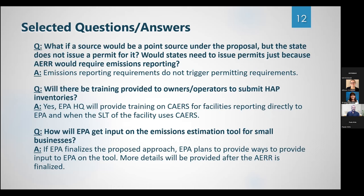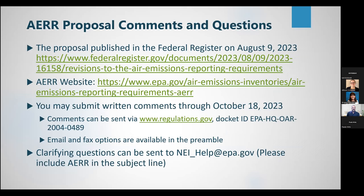We do have a variety of Q&As and we're working to get more of these on the web. The key points here are that these emissions reporting requirements do not trigger permitting requirements by states, that we will provide training to industries reporting directly to EPA — including small businesses — and that we will engage with the community, including industry, to get input on the tool to estimate emissions, though details on that would come after this provision is finalized. We have published in the Federal Register — the citation is in the first link — and we have a website with more information including registrations for those webinars. The docket is now open at regulations.gov, and people can submit clarifying questions to NEI_help@EPA.gov — please include AERR in the subject line.